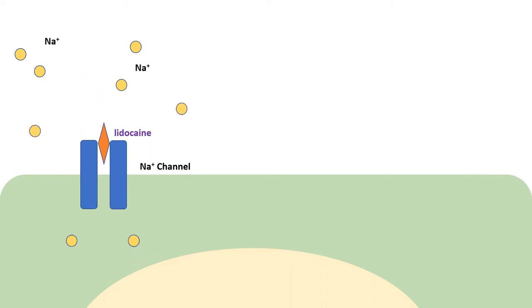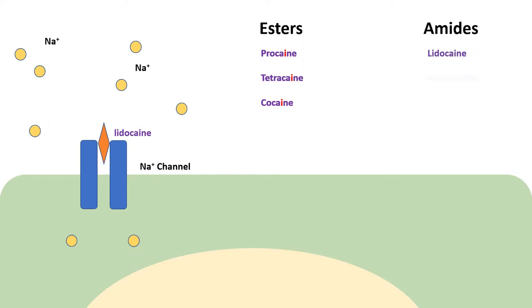There are two subtypes of local anesthetics: esters, such as procaine, which contain one 'i' in their name, and amides, such as lidocaine, which contain two 'i's.